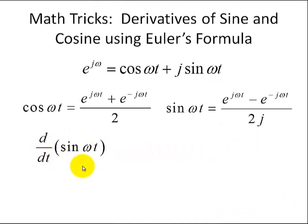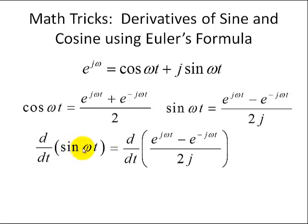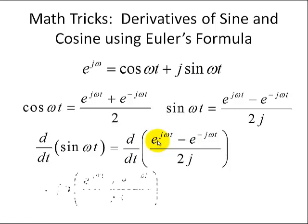I'll next do a similar process for taking the derivative of sine omega t. Substituting the complex exponentials into the sine, we get the derivative of the sine. We saw that the derivative of the exponential is just j omega times the same exponential. Factoring out j omega, we have e to the j omega t in this first term.